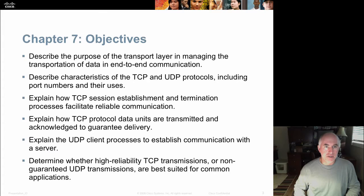After this lecture, we'll be able to describe the purpose of the transport layer in managing data's end-to-end communication. We'll describe the characteristics of TCP and UDP, including port numbers and their uses, explaining how TCP session establishment and termination processes facilitate reliable communication. We'll explain how TCP protocol data units are transmitted and acknowledged to guarantee delivery end-to-end, and explain the UDP client process to establish communication with the server. You'll be able to determine whether high-reliability TCP transmissions or non-guaranteed UDP transmissions are the best choice for common applications.